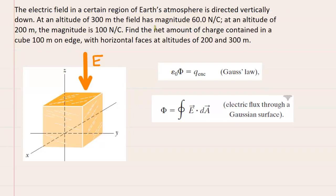Make sure you reattempt the question first before listening on. In this question we're trying to find the net amount of charge that is contained in a cube 100 meters on edge. We went ahead and drew a cube and then we centered it on a coordinate system. The question notes that the electric field is directed vertically down so we've drawn an electric field pointing straight down.